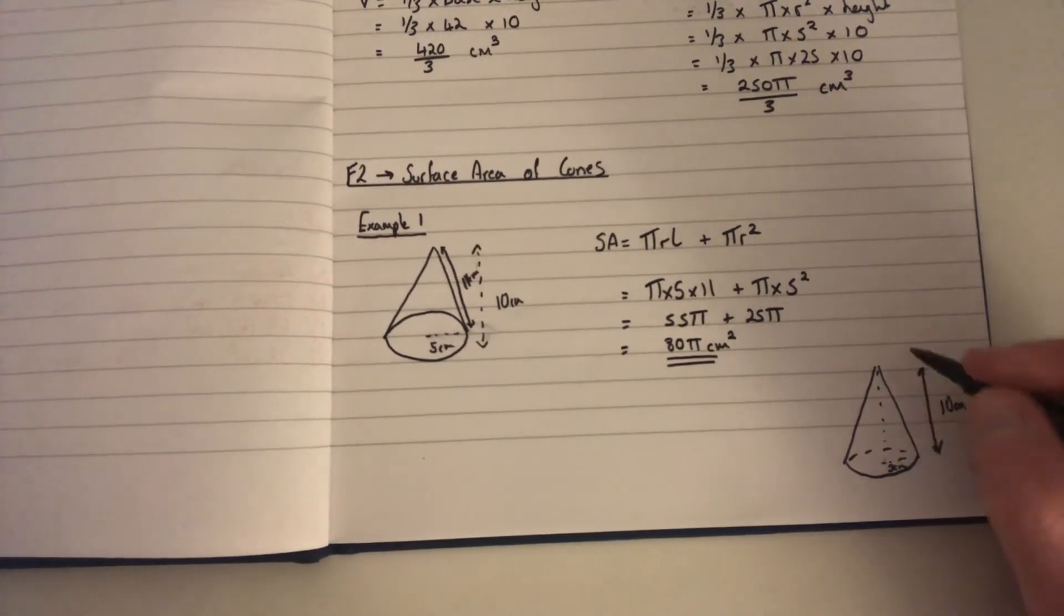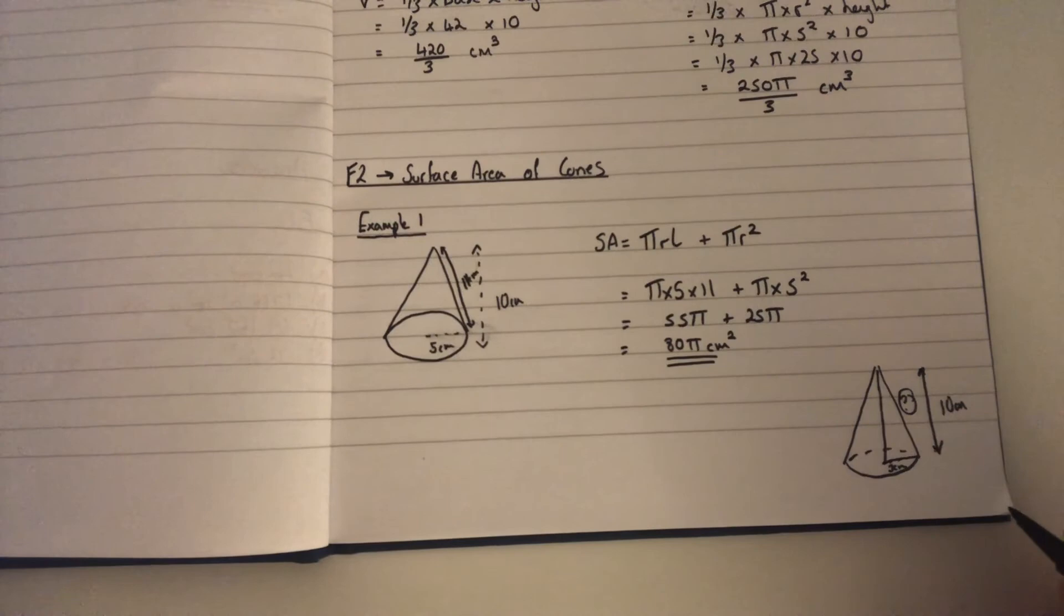this bit here. So you don't know this bit here, but you do have a right-angle triangle here, so you can do Pythagoras to work out this and then substitute it into that formula. Have a go at the